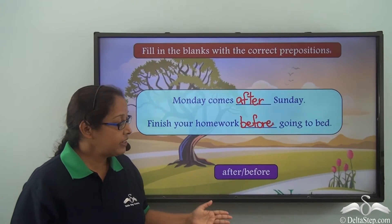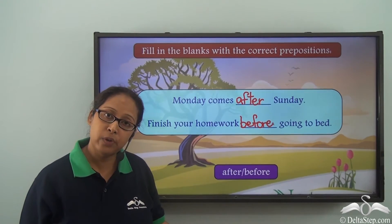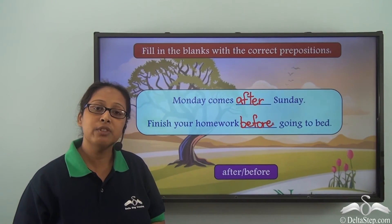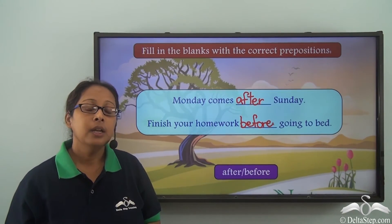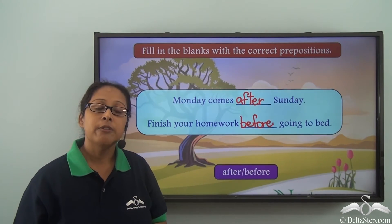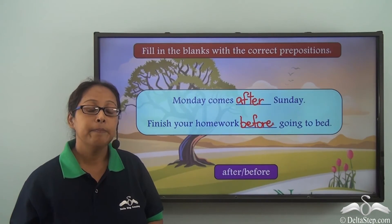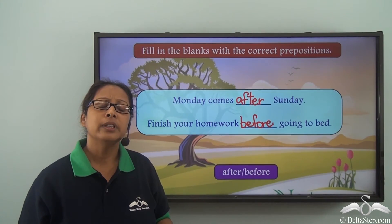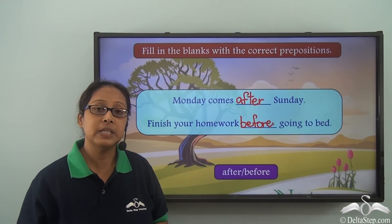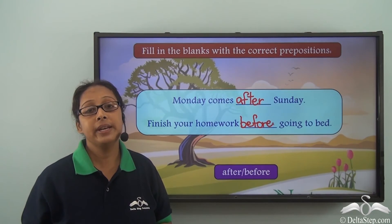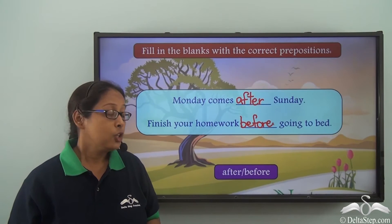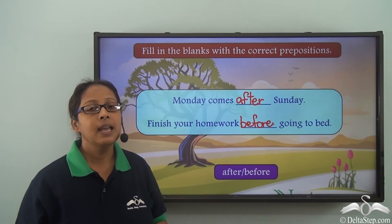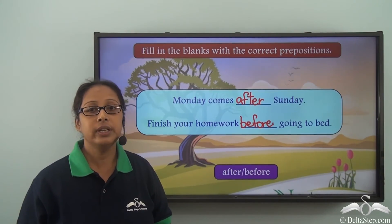Today we have learnt two new prepositions: 'after' and 'before'. After refers to something happening later than, while before means something which happens earlier. After and before are opposite to each other. There are many other prepositions we will learn soon — try using after and before in sentences to check your understanding.